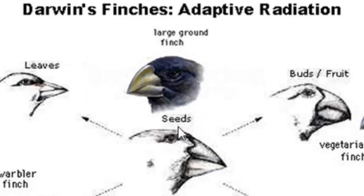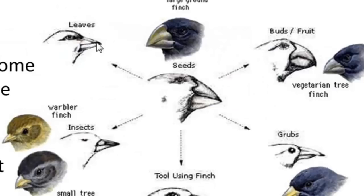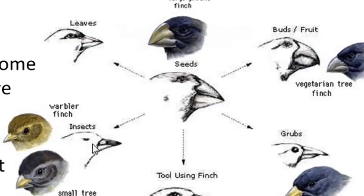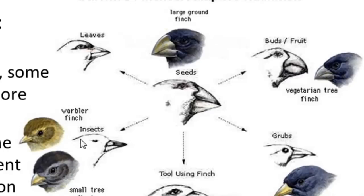For example, this beak here is the beak of a bird that eats seeds — it looks similar to the original finch beak. This one eats fruit; it's a vegetarian tree finch that eats buds and fruit, so it's similar but looks a little different — you can see little arches. This one eats leaves, so the beak is a little more pointy. And this bird is a small tree finch that eats insects; its beak is also pointy, which helps it grab insects. That type of beak helps this bird in particular because it eats insects, whereas a bird that eats fruit probably doesn't need a beak like that.